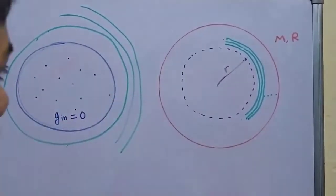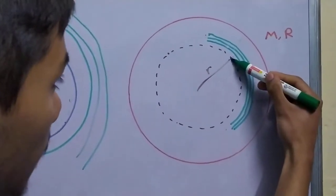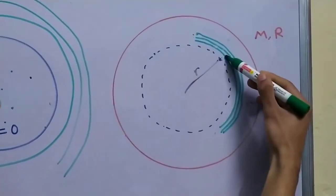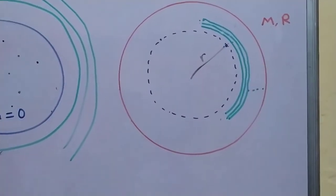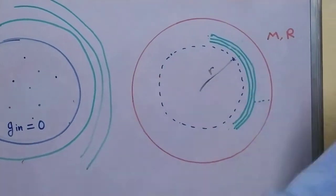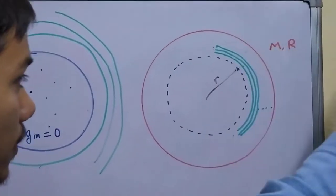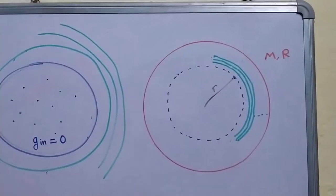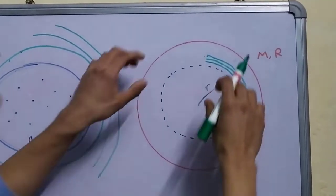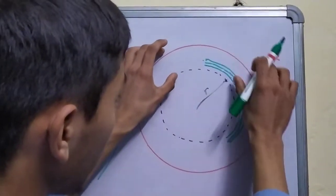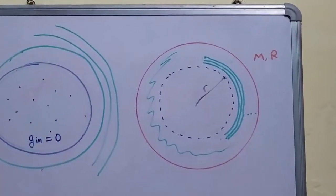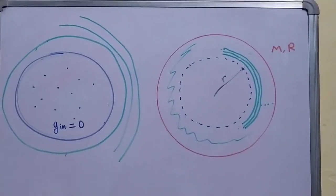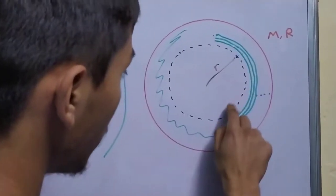The field due to this one at this point will be 0 because this point is inside this shell. The field due to this one is also 0. This one is also 0. So the field due to all these hollow shells will be 0 which in turn means that the field due to the entire region, this region, is 0.